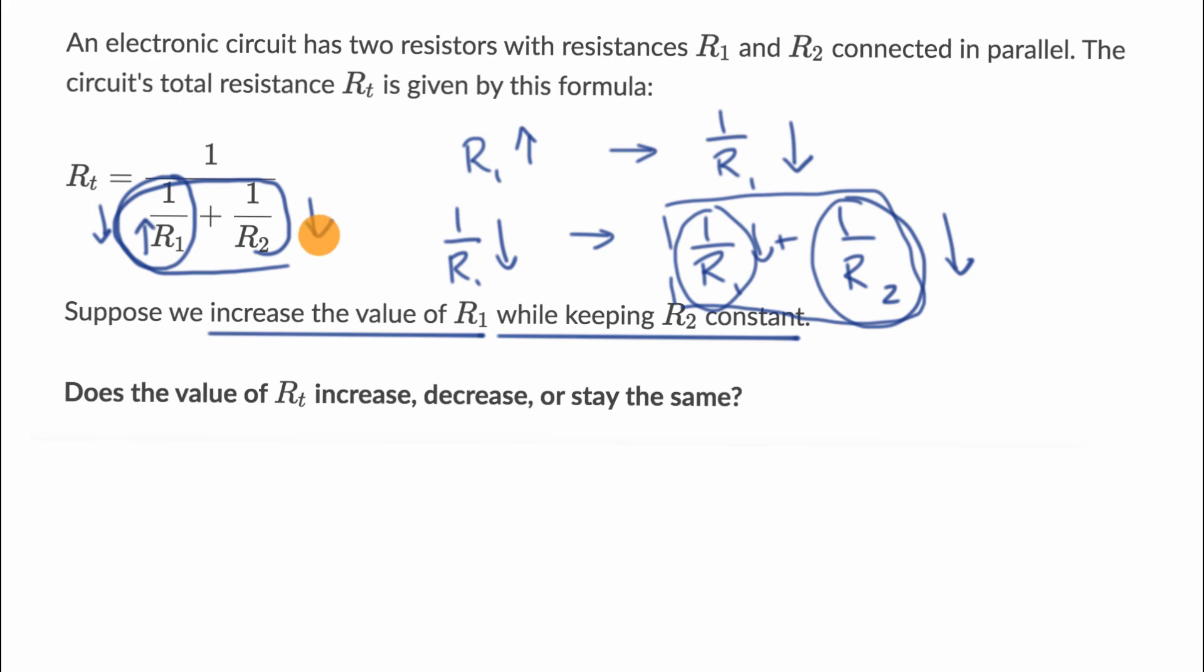Now, if the entire denominator is going down, if one over R1 plus one over R2, if this whole thing is going down, what's going to happen to the reciprocal of that? One over, one over R1 plus one over R2.